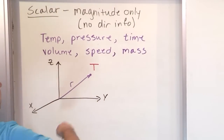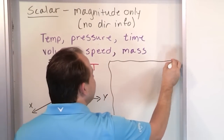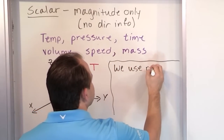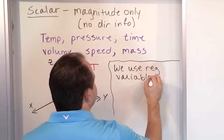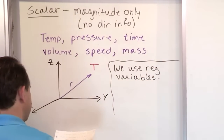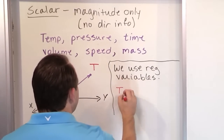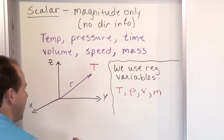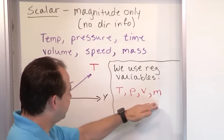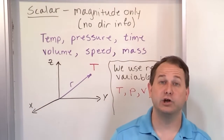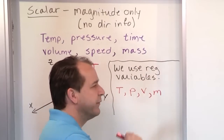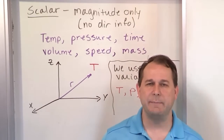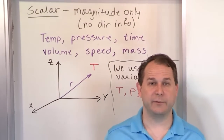Because these things are not pointing any particular direction, we use regular variable names to describe them. Scalars are just a number — we use regular variables. We might use T for temperature, lowercase p for pressure, v for volume, m for mass, lowercase t for time. When we have vector quantities, vectors include a direction, so vectors are going to have a little arrow above the variables. When you see a variable in a textbook with no arrow on top, it's just a scalar quantity — just a number, whatever value it is at that location.